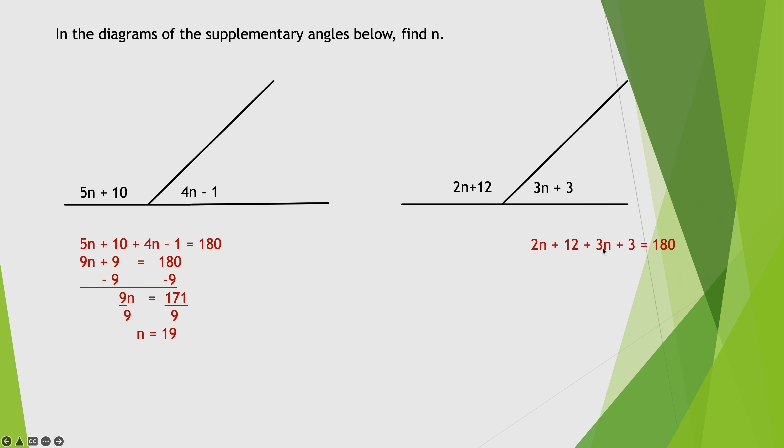So 2N plus 12 plus 3N plus 3 is 180, same side, same operation. 5N plus 15 is 180, minus the 15, 5N is 165, dividing by 5. And one of my favorite numbers, N is 33.